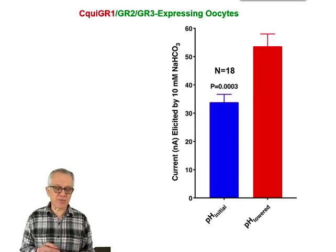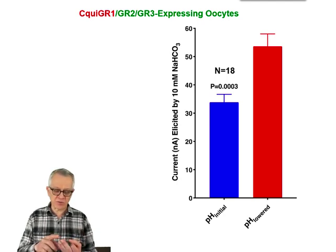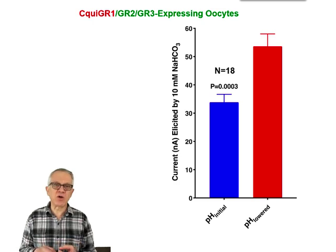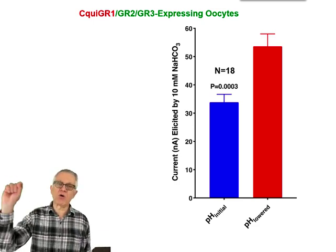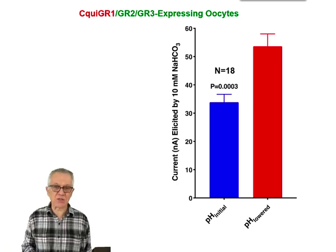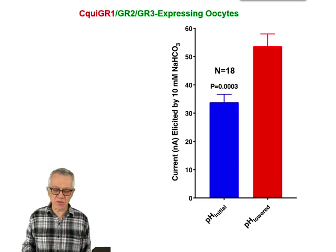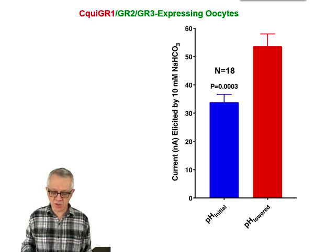We also did the same set of experiments using the ternary mixture of receptors — GR2 and GR3 plus added GR1. Of course, when GR1 is part of the picture the response decreases, but nevertheless when we lower the pH we always see an increase in response. We repeated this experiment 18 times, and it is very clear that GR1 does not interfere with that process at all.